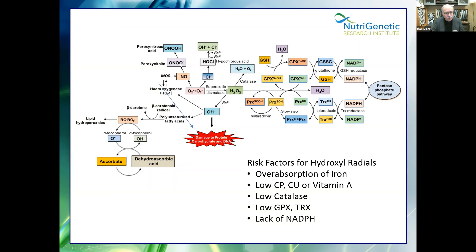If that conversion doesn't happen efficiently, hydrogen peroxide combines with iron in the Fenton reaction to make hydroxyl radicals, which damage proteins, carbohydrates, and DNA, and can oxidize your fats. It will also combine with iNOS and superoxide to make peroxynitrate, another very oxidizing agent that suppresses the immune system. Risk factors include genetic or epigenetic factors, eating too much iron, low ceruloplasmin — which is copper-dependent — and we need vitamin A.